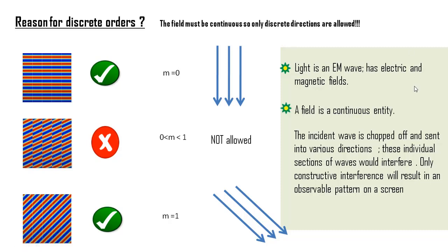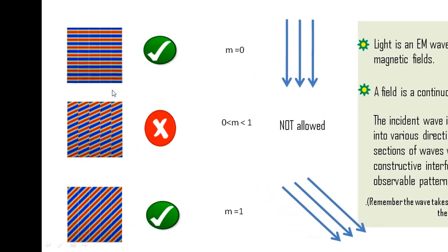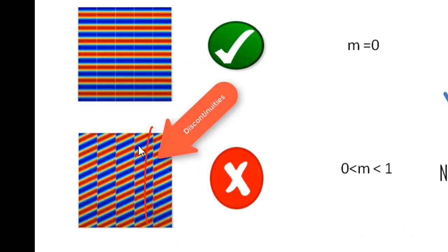A field as we know is a continuous entity. Since we've seen how the incident wave takes on the same period as that of the host, we use these fine lines to indicate the sharp wavefront. Now in order to see any observable pattern on the screen, these individual fields need to interfere accordingly. If we change the angle of each section by equal amounts, we see that in the second picture, these fields from various slits aren't continuous at the dotted lines and are not interfering constructively. We wouldn't see a diffraction pattern in this case.